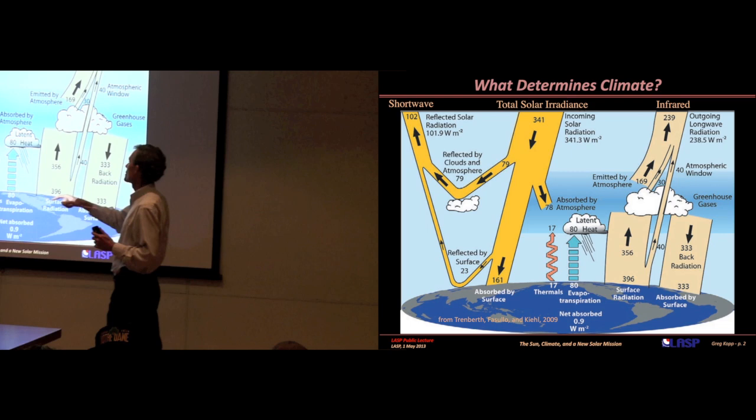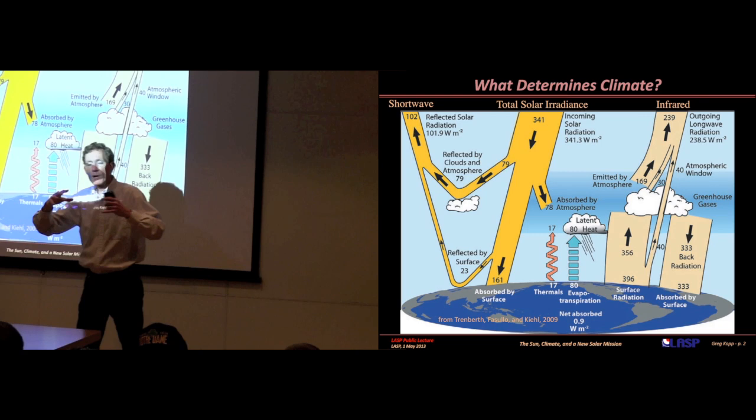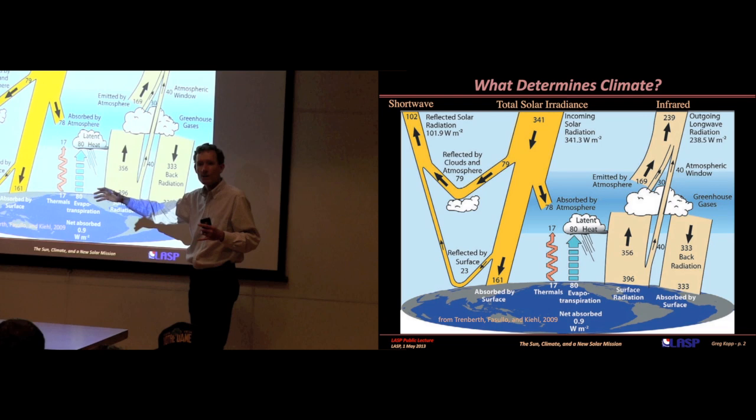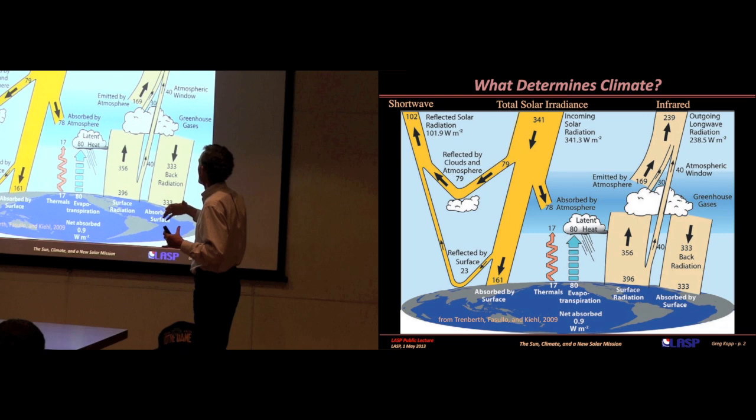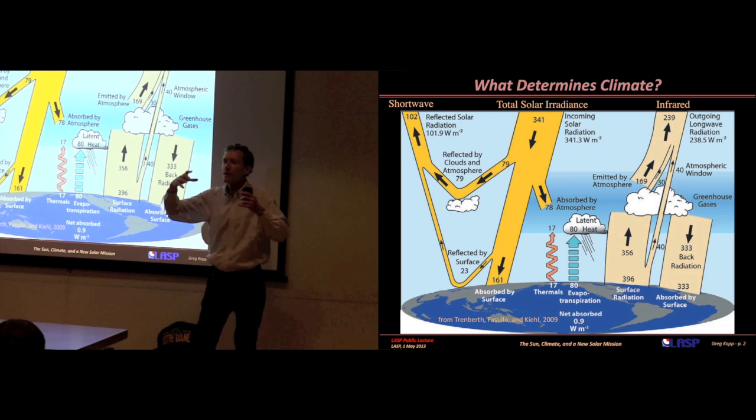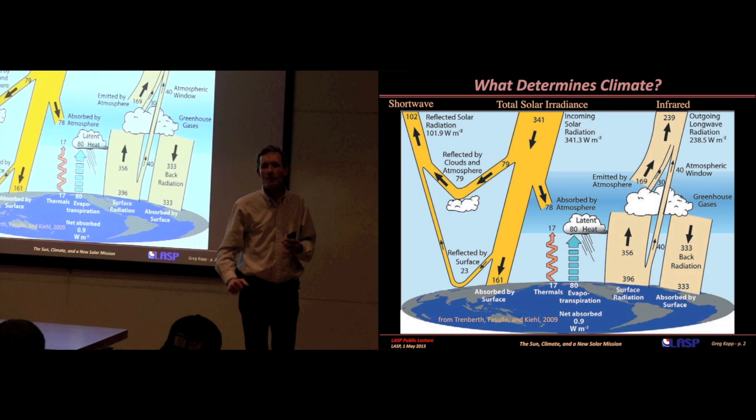The other two-thirds get absorbed at the surface or directly in the atmosphere. That energy goes into heating up the Earth and the atmosphere. As the Earth gets warmer, it radiates energy away at longer wavelengths. The incoming light is mostly in the visible. The energy that radiates away is at longer wavelength, in the infrared. That energy tries to go out, and a lot of it gets absorbed by upper levels in the atmosphere, by greenhouse gases.